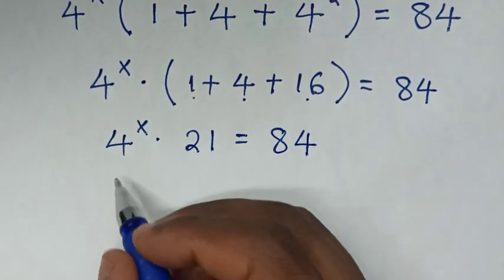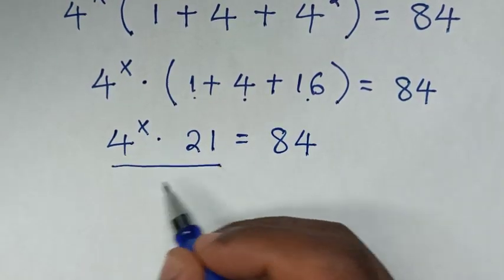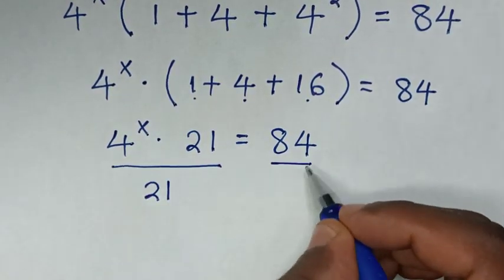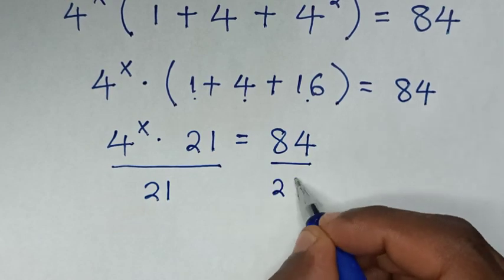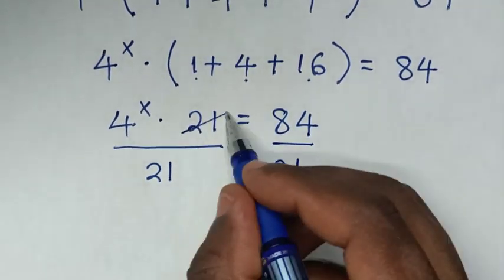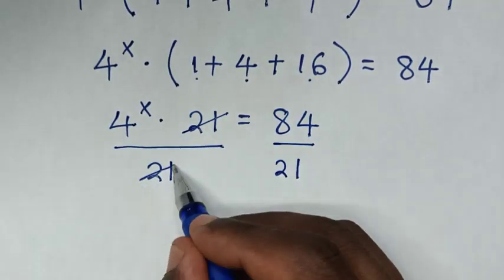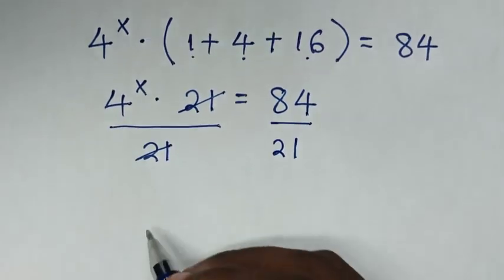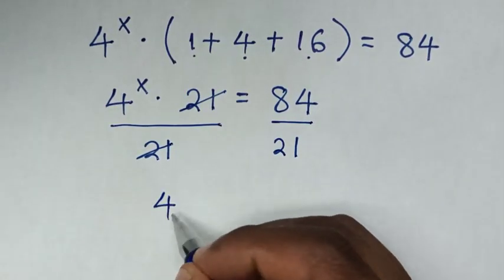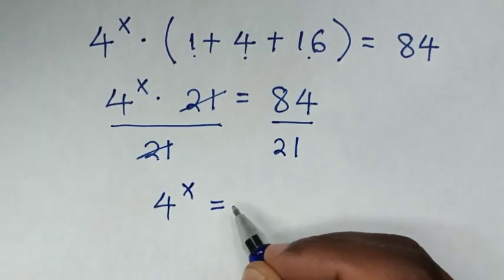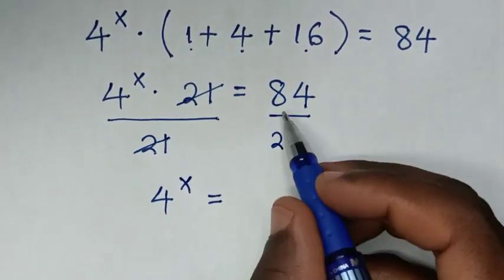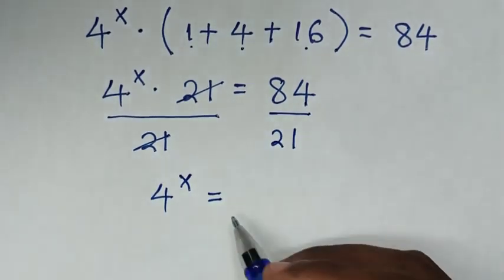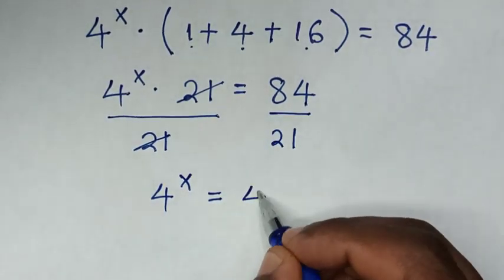Then we divide by 21 on both sides, so this 21 cancels with this 21. Then it will be 4 power x is equal to 84 divided by 21, which is 4.